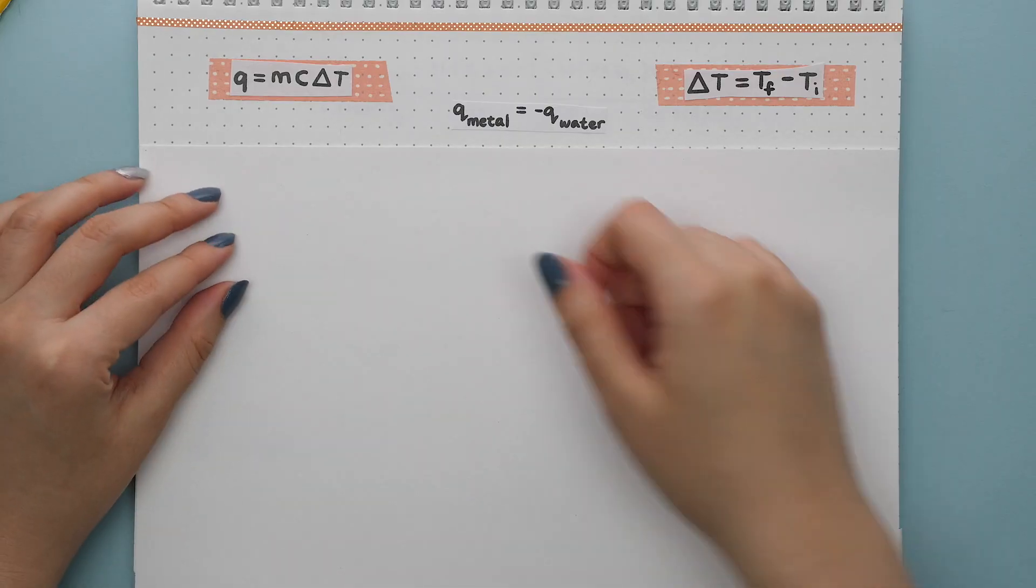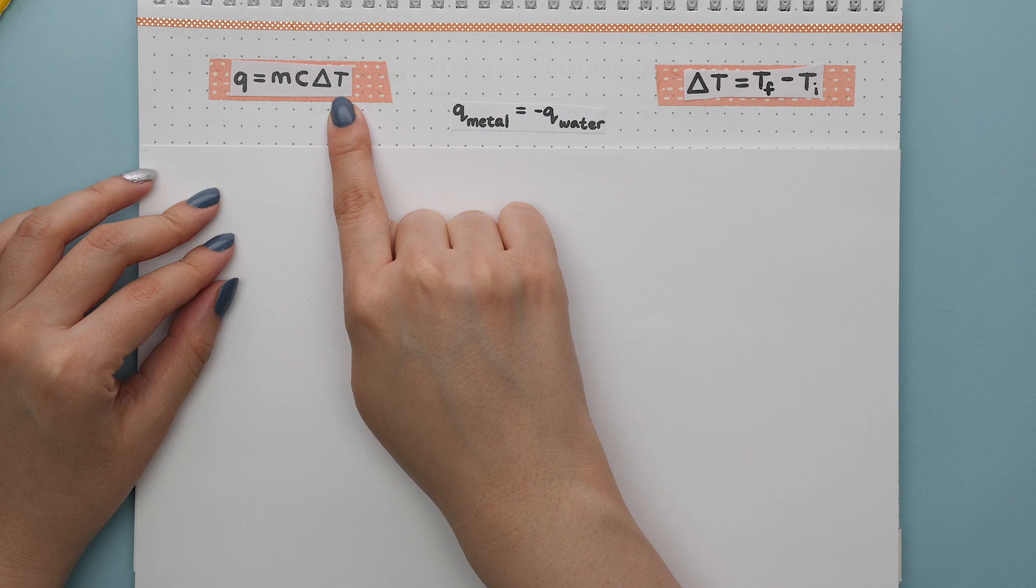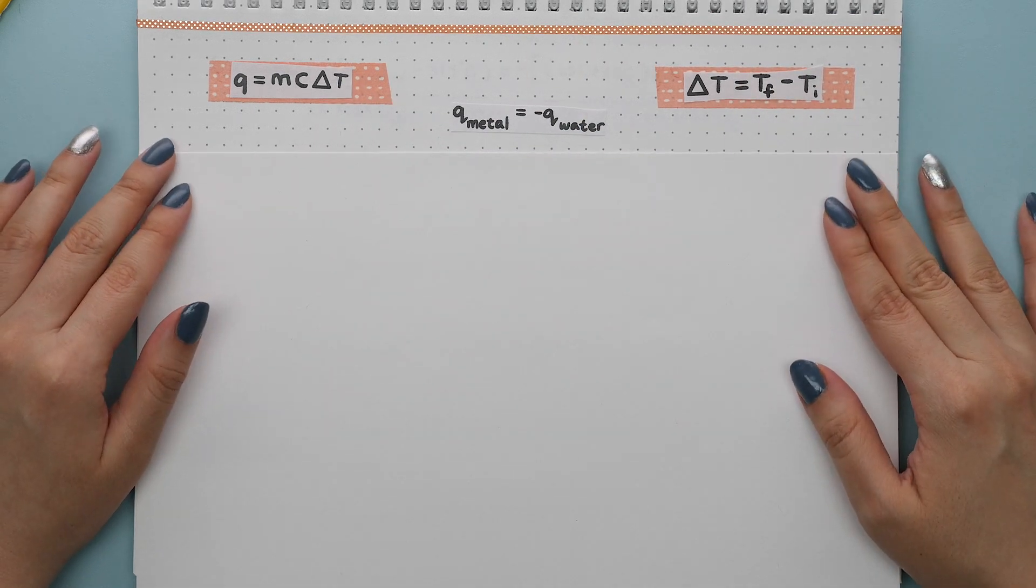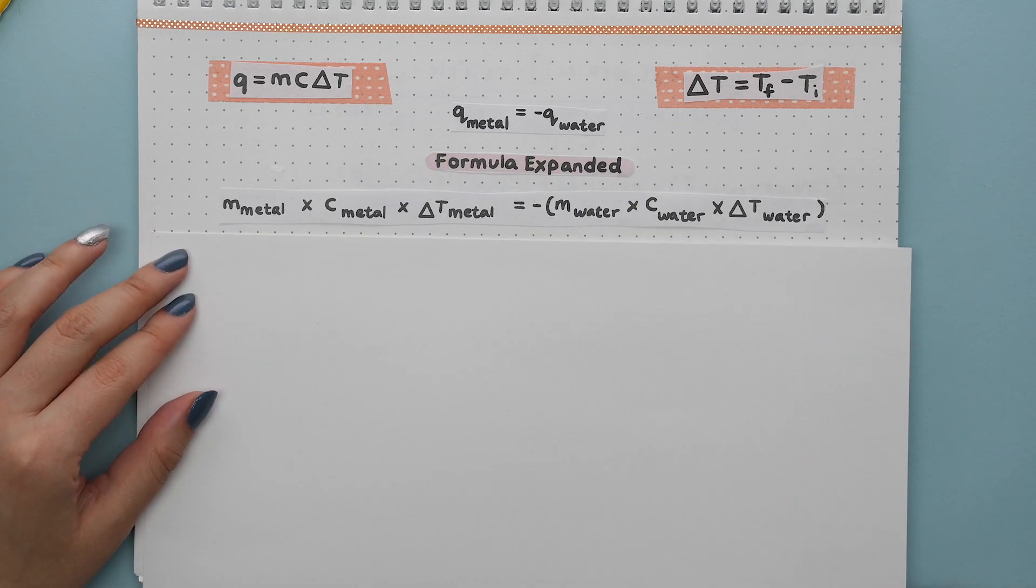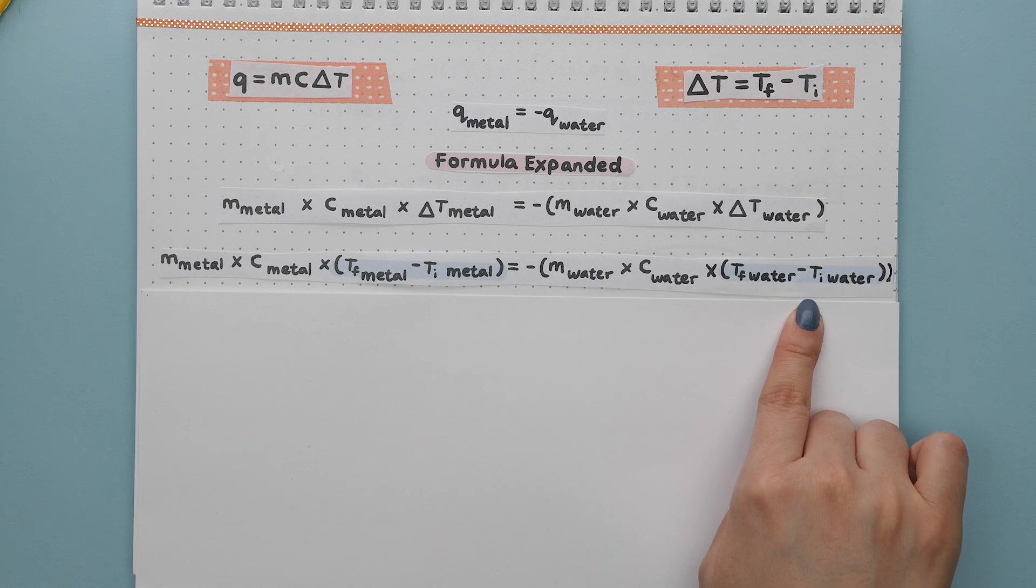The formula for Q is mass times specific heat capacity times the change in temperature, which is the final temperature minus the initial temperature. We can substitute Q with this formula for the metal and for water. We could also expand the change in temperature for the metal and the water.